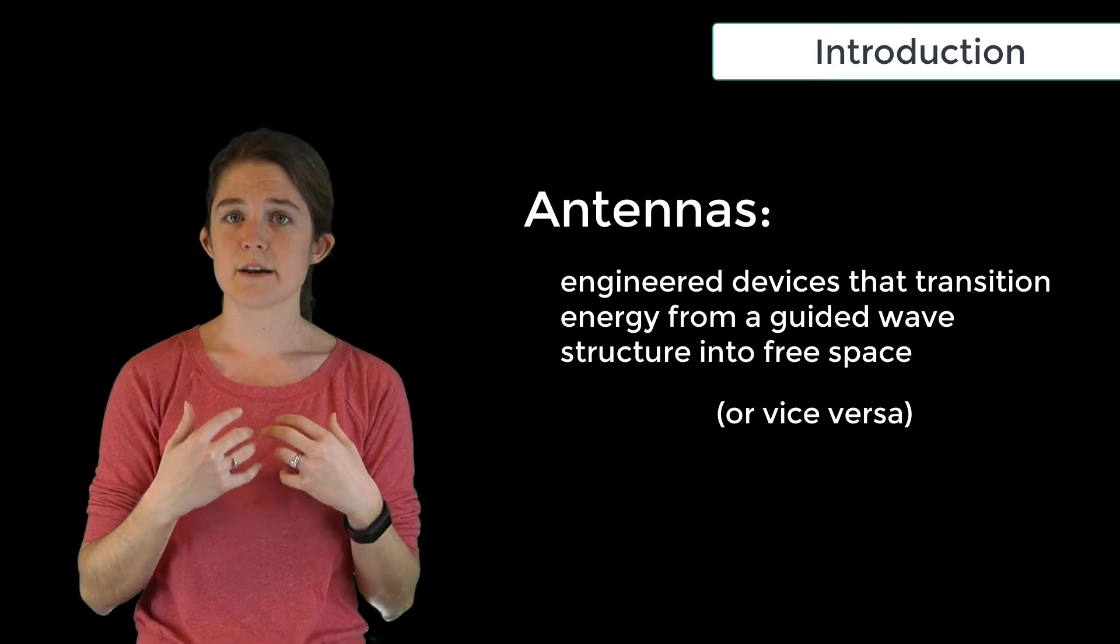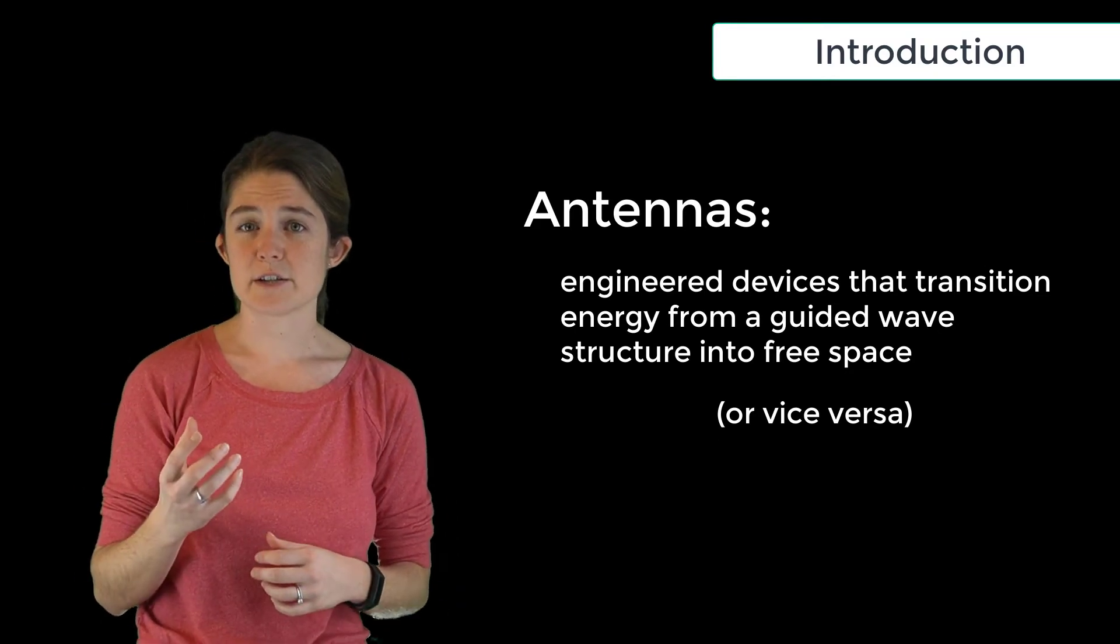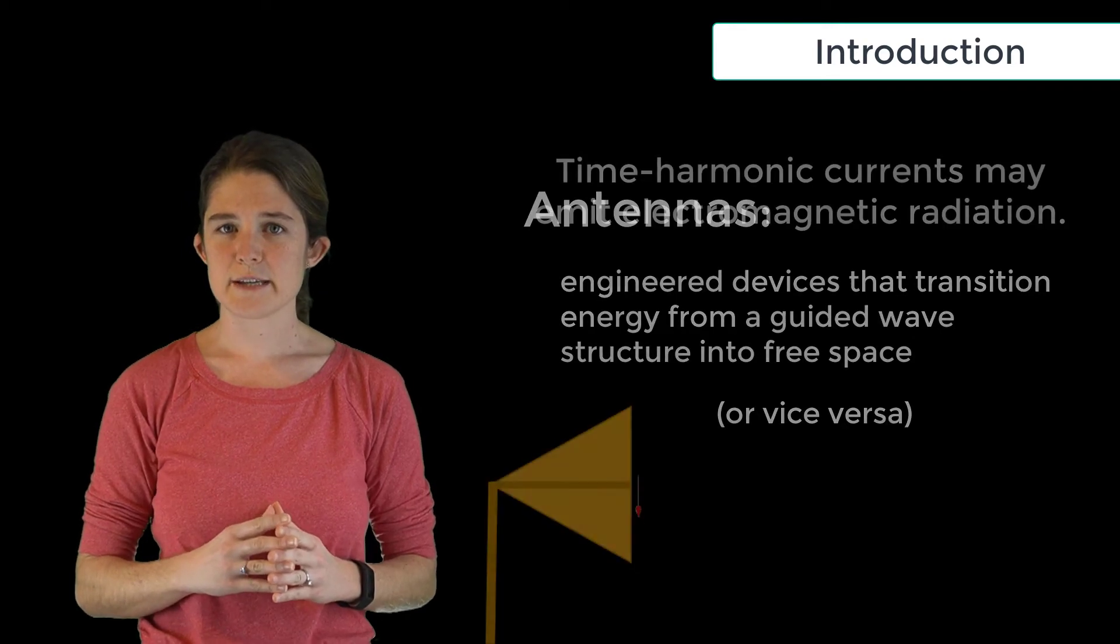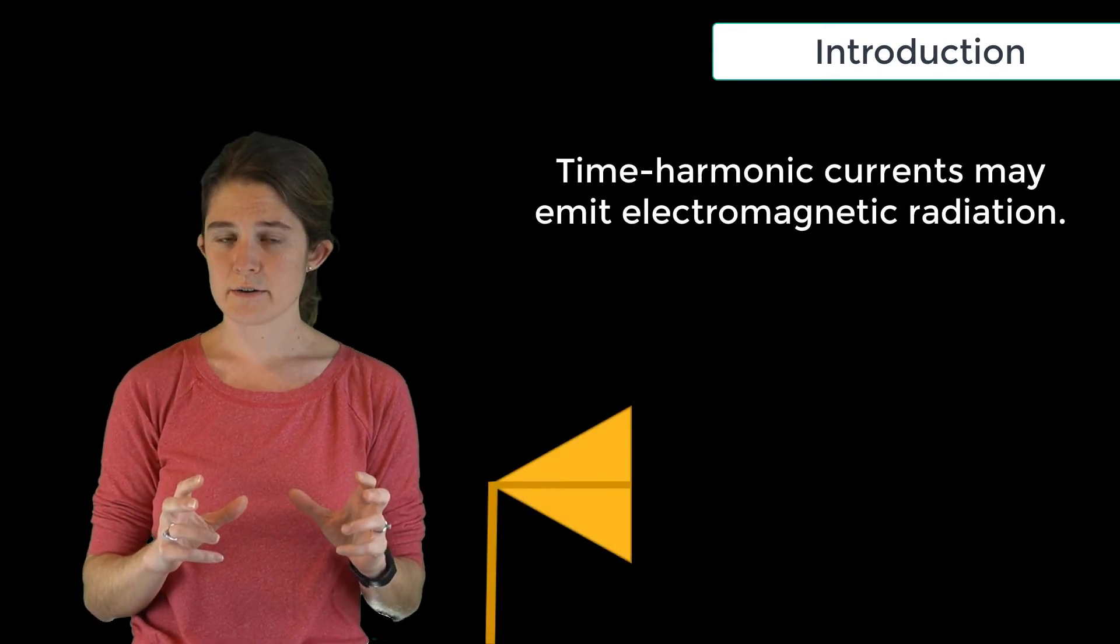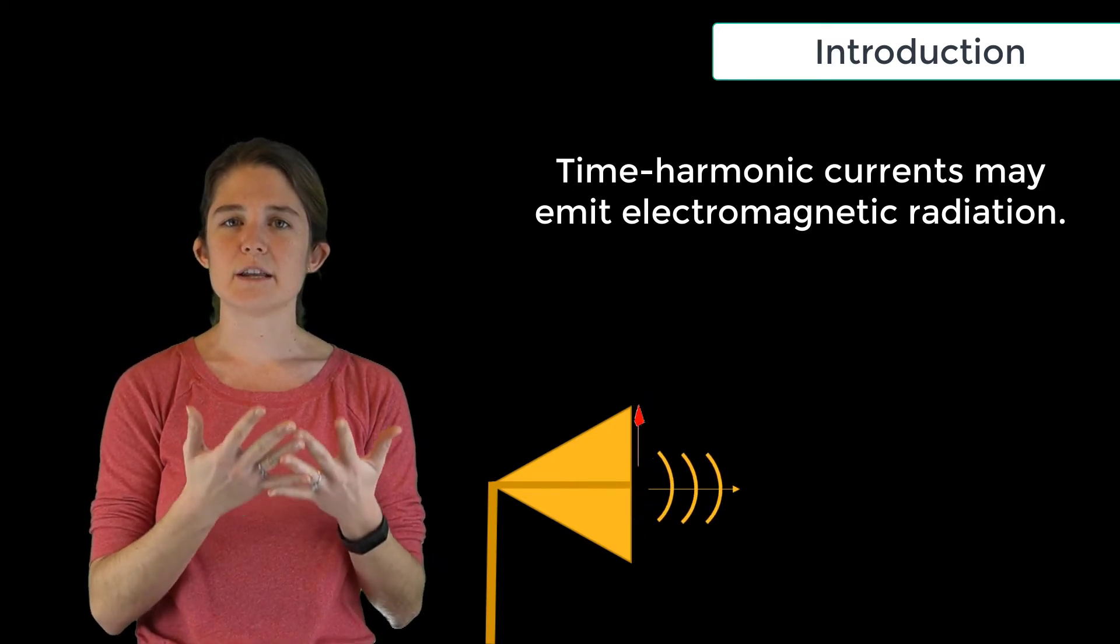The mechanism by which this transition of energy is achieved is embedded in Maxwell's equations. As we will see, a time harmonic current, or a current that varies sinusoidally with time, emits radiation in the form of propagating electromagnetic waves.